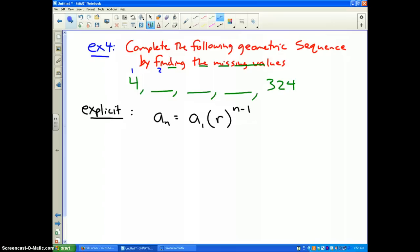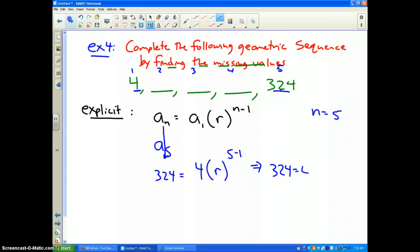Now if I write this out, what do we know? Well first of all, we have one, two, three, four, we have five terms in this problem. This is the fifth term. So n is going to be equal to five. Well if n is five, then that means our fifth term a sub 5 is 324. So I have to put 324 where this is. We know our first term is four, and then I have R to the five minus one power. Well, if I simplify that, I get 324 equals 4 times r to the 4th power.